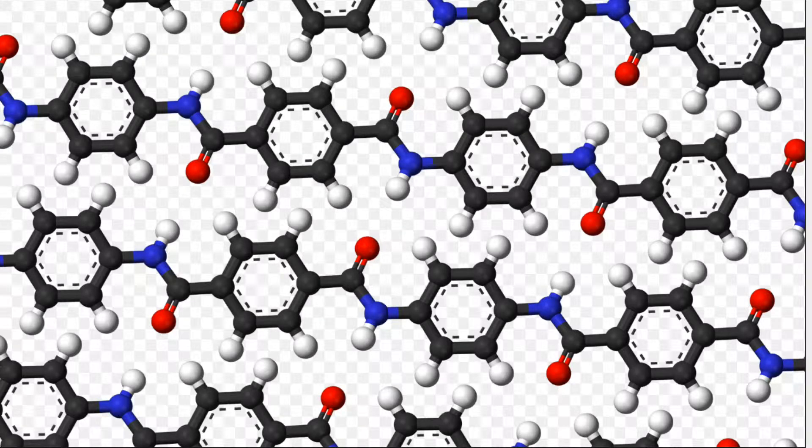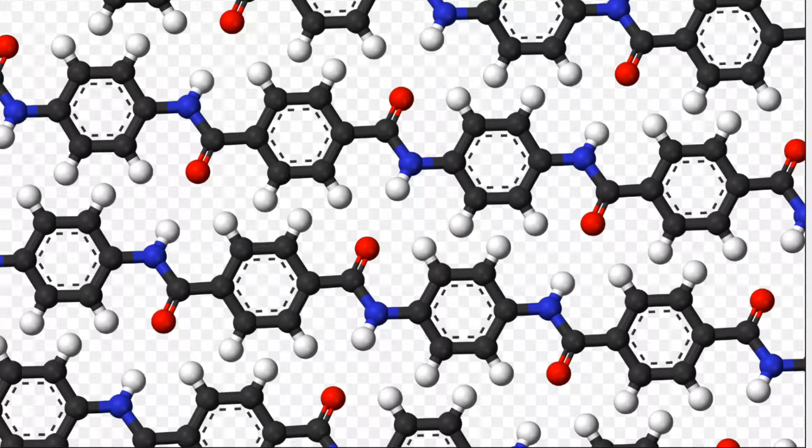Polyparaphenylene terephthalamine, commonly known as Kevlar, is made up of long chains of polymer MERS. The MERS have a chemical formula of, are you ready for this? CO, CO, C6H4, CO, NH, C6H4, NH. This tells us a few things about its structure.